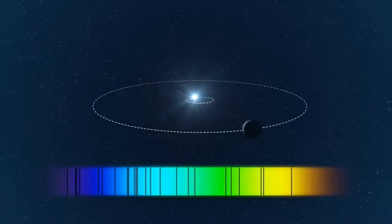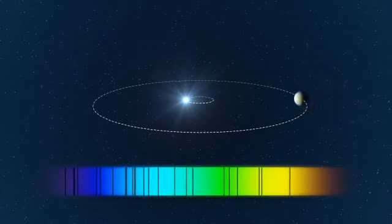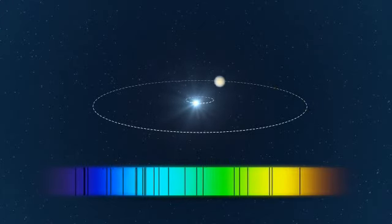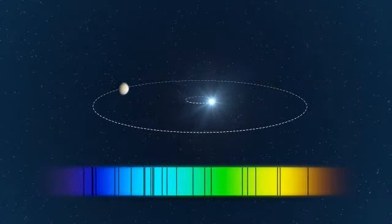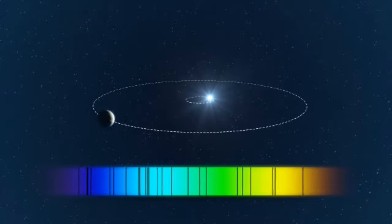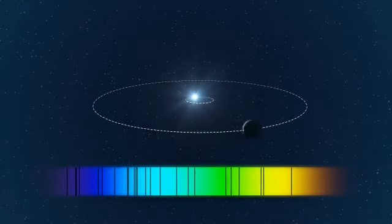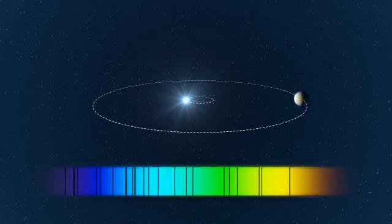A planet in orbit causes its star to regularly move backwards and forwards as seen from Earth. This creates a tiny shift of the star's spectrum that can be measured with an extremely sensitive spectrograph such as HARPS.